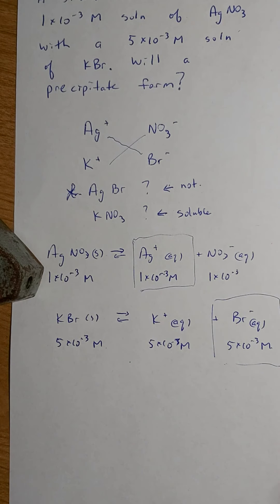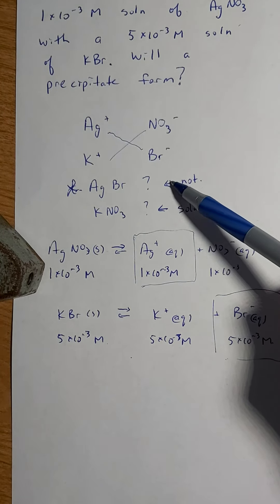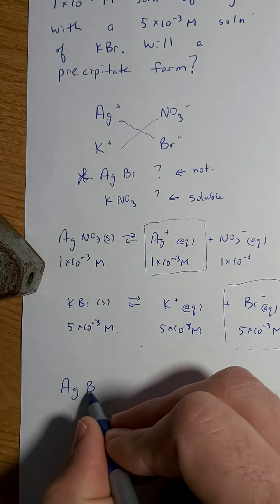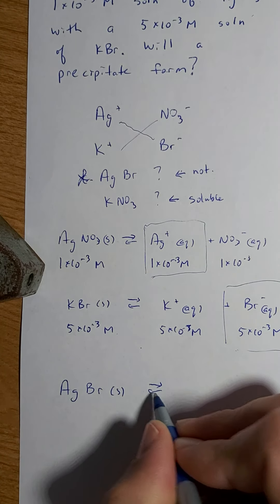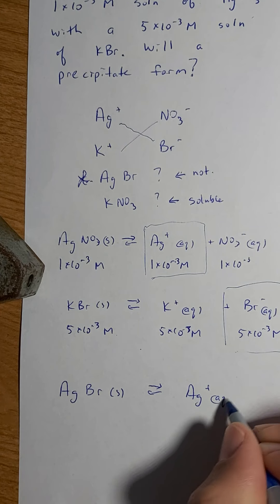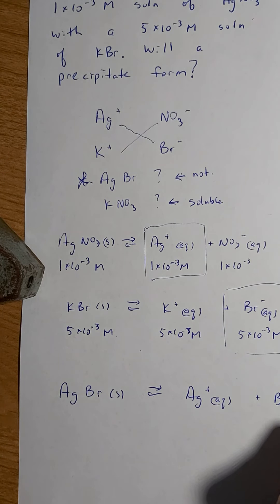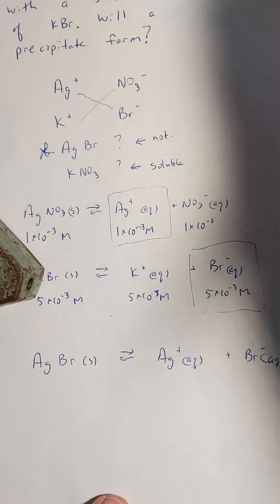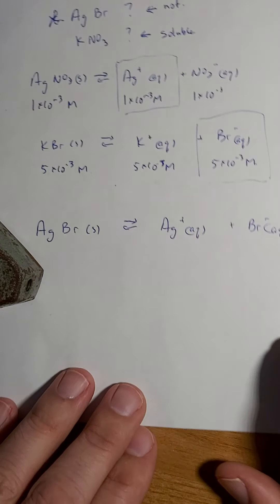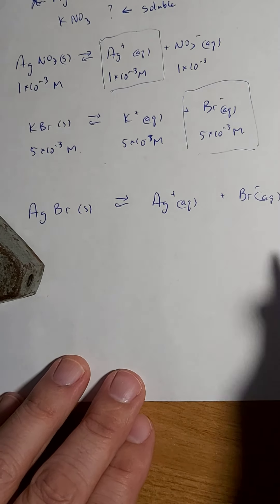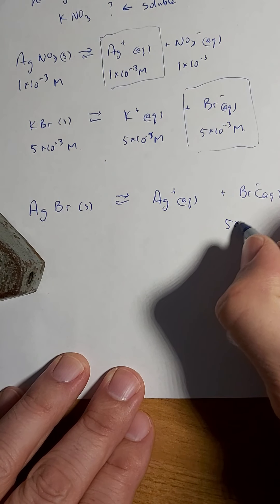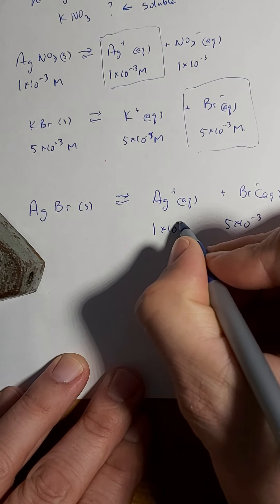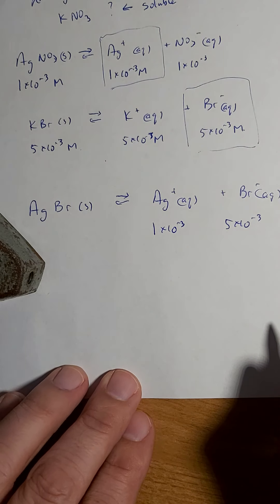Now let's talk about what I'm actually trying to see. Is this thing going to form? So let's write that reaction. AgBr solid going to Ag+ and Br-. Now, I know the concentration of Br- is 5x10^-3 and I know the concentration of Ag is 1x10^-3.